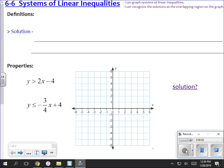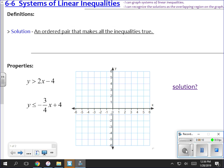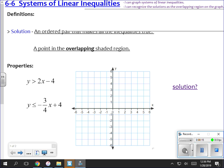So, solving systems of linear inequalities, you cannot solve them algebraically. You can only solve systems of inequalities graphically. The solution is an ordered pair that makes all of them true. It's a point in the overlapping shaded region.